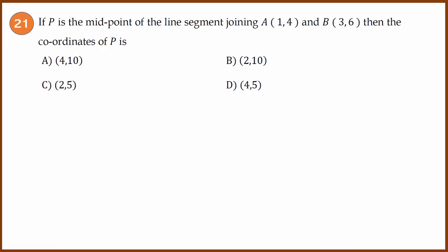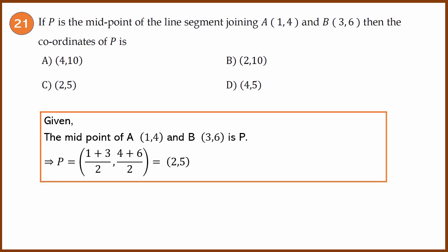The first question is a coordinate geometry question. If P is the midpoint of a line segment joining A and B, then the coordinates of P are found using the midpoint formula. The midpoint of A(1,4) and B(3,6) is P, obtained by adding the x-coordinates divided by 2 and the y-coordinates divided by 2, which gives (2, 5). The answer is C.